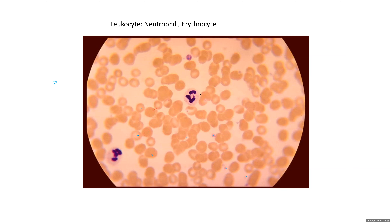Looking at this neutrophil: one, two, three, four-lobed nucleus — you can see the connecting band. Compare that to another neutrophil with a five-lobed nucleus. The older the neutrophil gets, the more lobes it will have. Size, nucleus, granules — three things to look for. Another neutrophil here is darker because the slide was left in stain too long, but the four-lobed nucleus confirms it's a neutrophil. Always go by more than one character — size, granularity, nucleus.